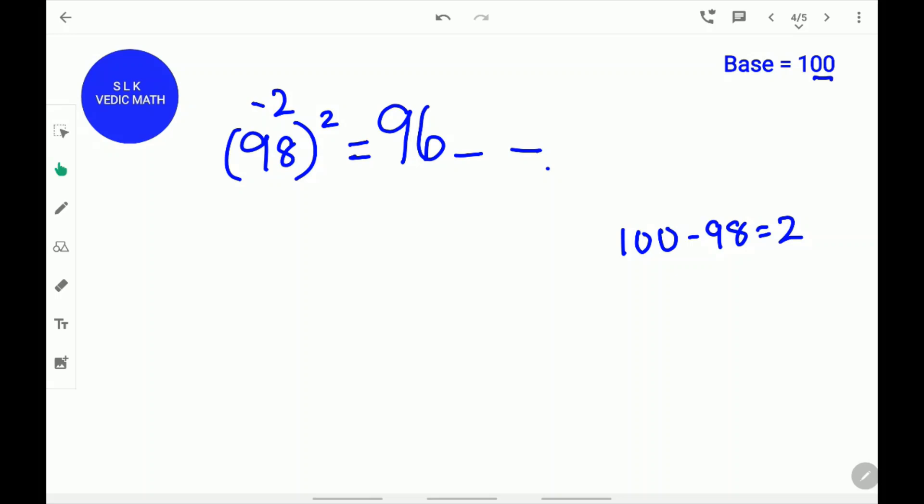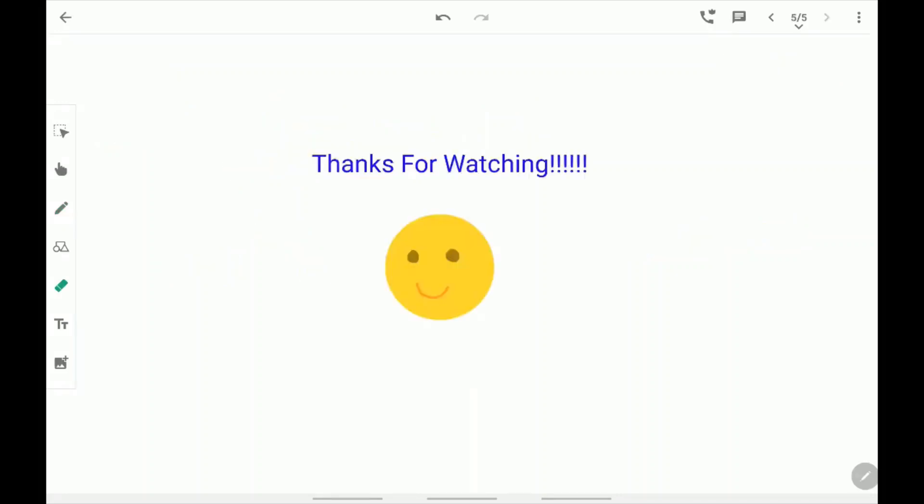Next, square this difference 2. 2 square is 4. Write 4 as 04 because there are two zeros in 100. Thanks for watching!